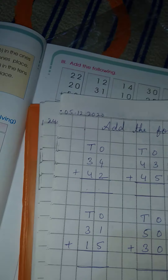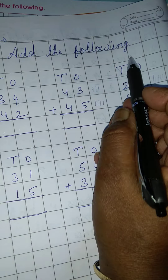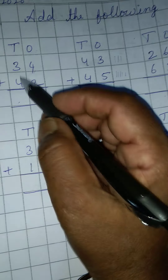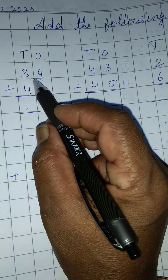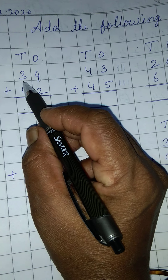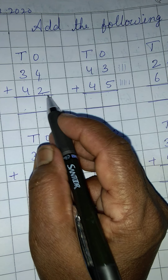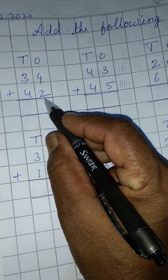Okay, like this you have to do today. See here — add the following. 34 plus 42. In 34, how many tens are there? 3 tens. How many ones are there? 4 ones. In 42, how many tens are there? 4 tens. How many ones are there? 2 ones.